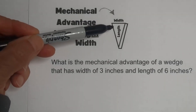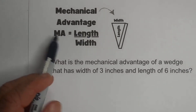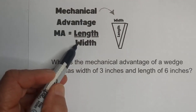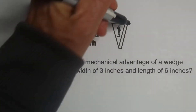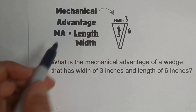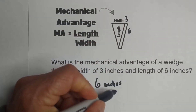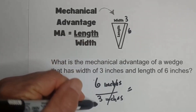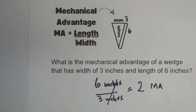For a wedge, the mechanical advantage is the length divided by the width. What is the mechanical advantage of a wedge that has a width of 3 inches and a length of 6 inches? Plugging in: length is 6 inches, width is 3 inches. The units cancel, and 6 divided by 3 is 2. So the mechanical advantage of this wedge is 2.